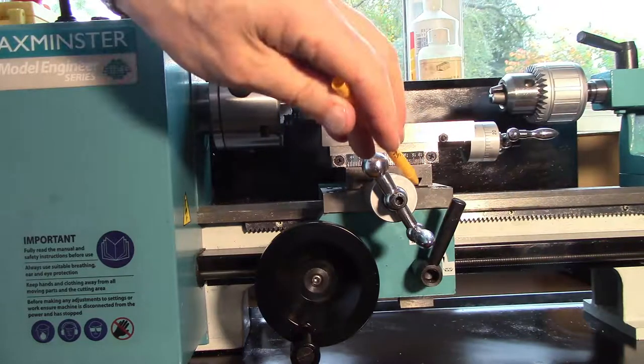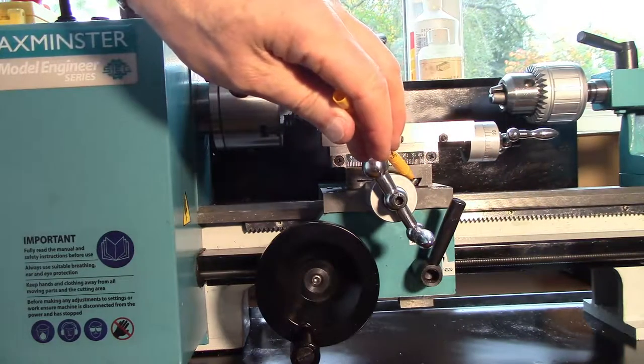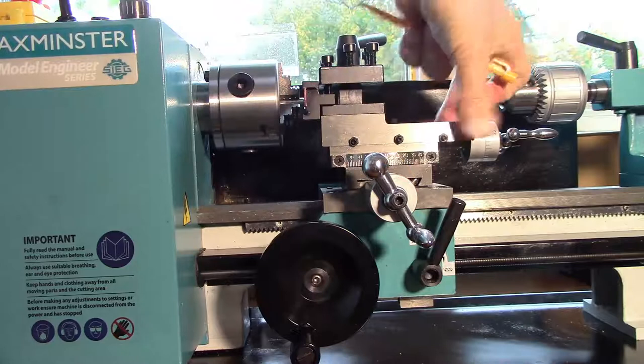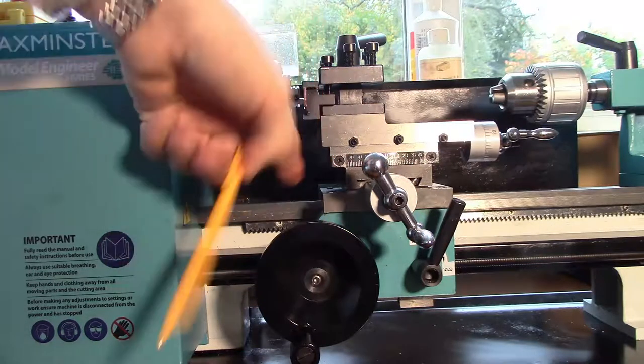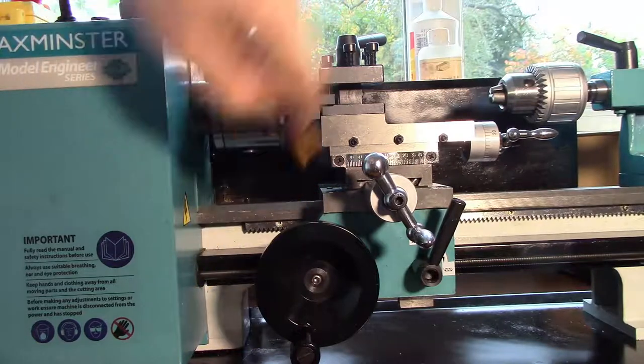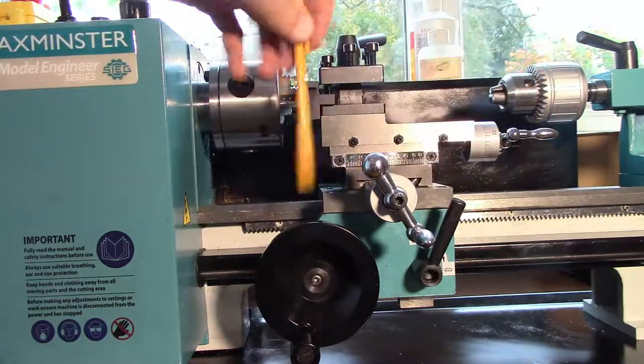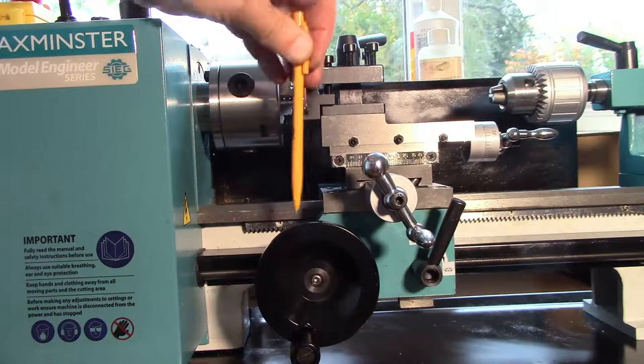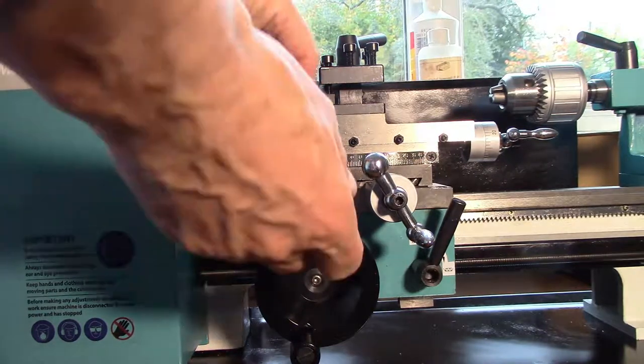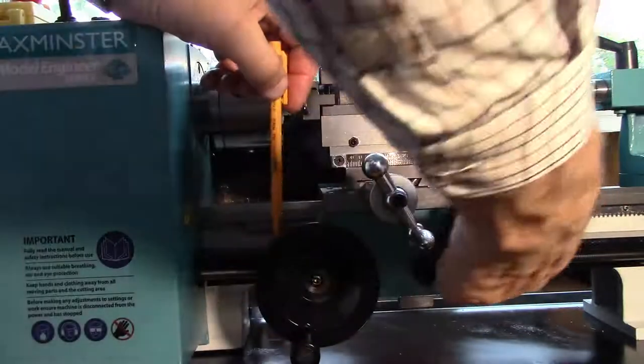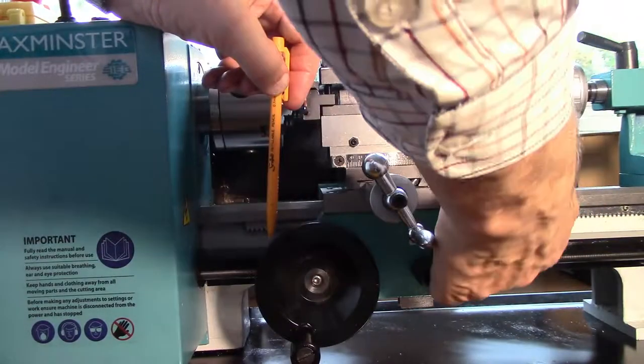which if not restrained by this gib will allow some movement. Equally, the saddle itself is supported on this rail here and here and pressing down to the left of this point again exercises a leverage effect and tends to make this side come upwards.